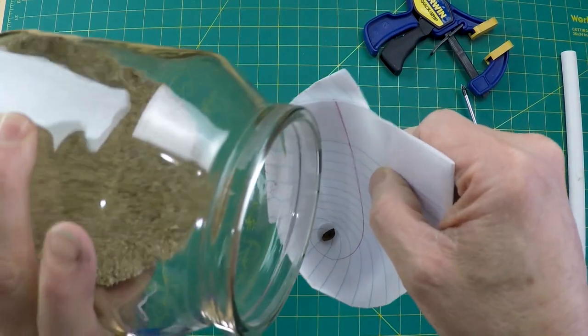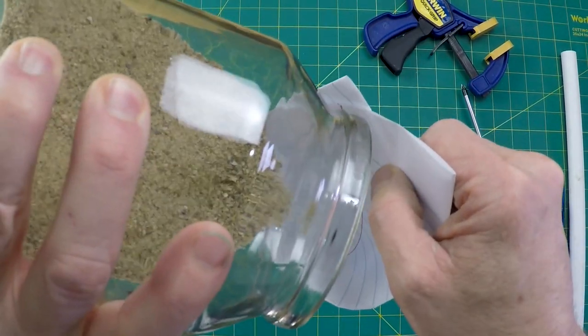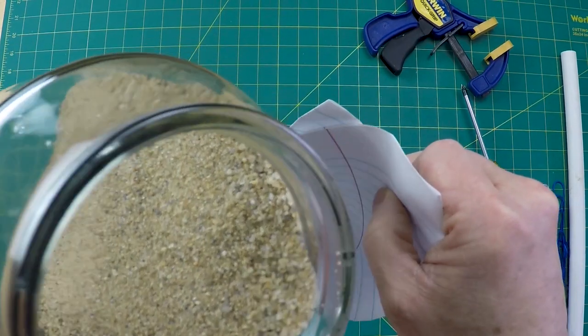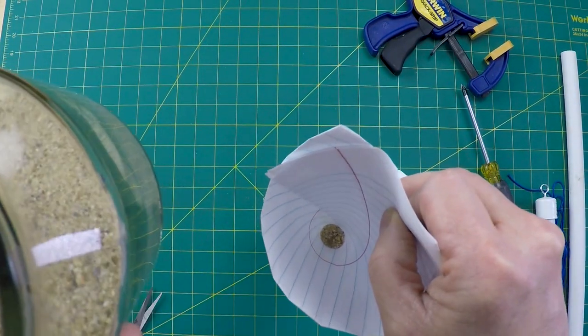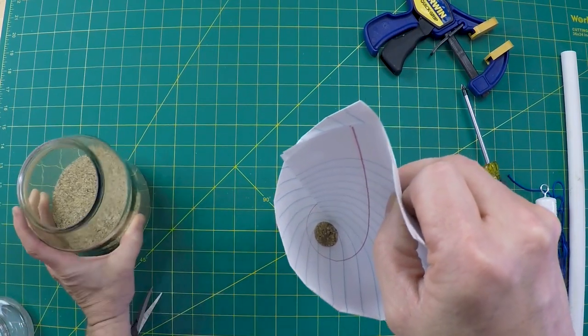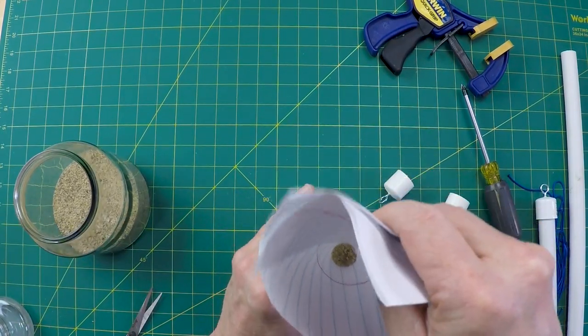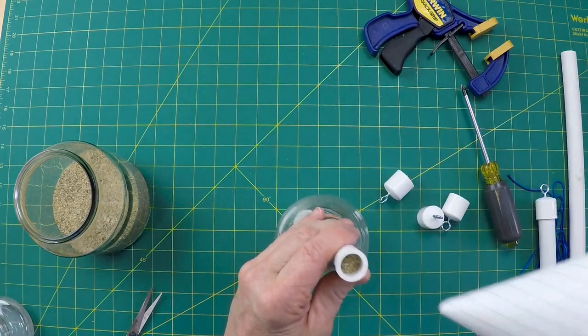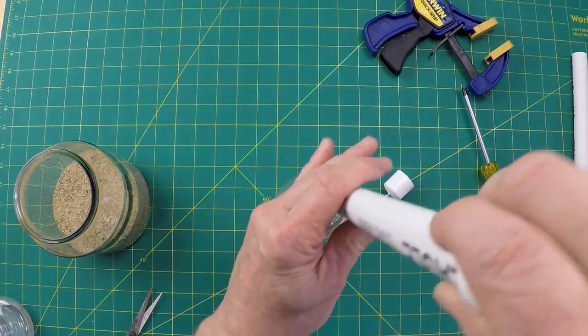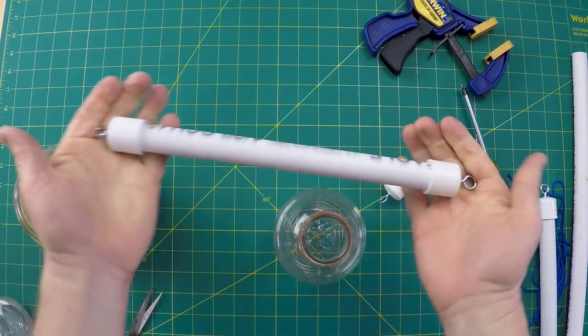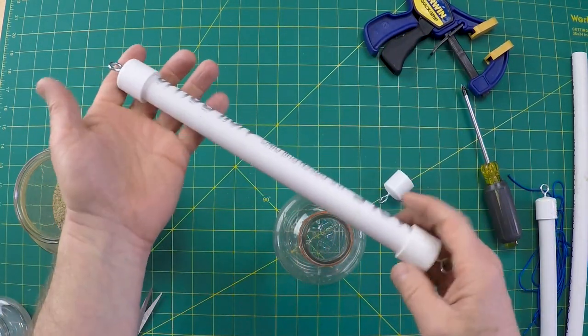Pour your sand in. When you get towards the top you'll see that it just stops going in. And you can just shake a little bit. And there you go. Full of sand. Cap it off. And then do that to all three sections.